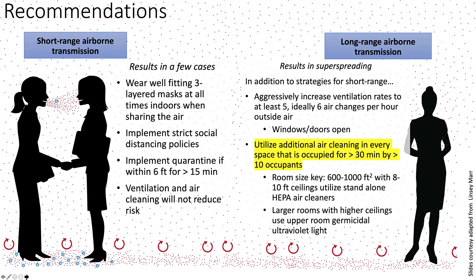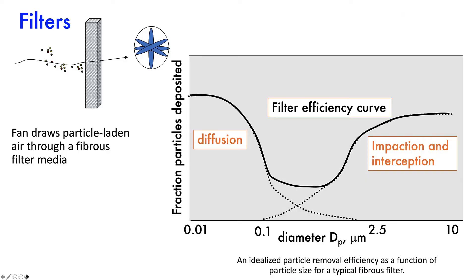Make sure that you can provide the right size air cleaner for the room in which you are applying it. A fan will draw particle-laden air through a fiber filter media. Very small particles deposit in the filter by diffusion, and very large particles deposit by impaction and interception. These combined create the filter efficiency curve where the minimum efficiency is at 0.3 microns.